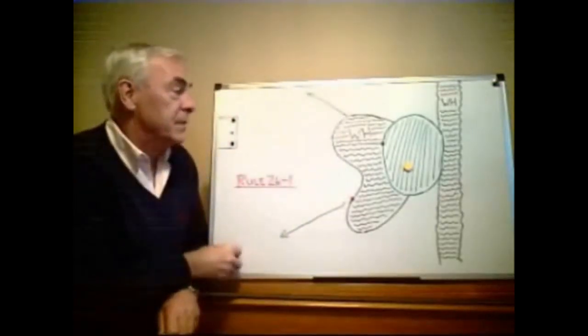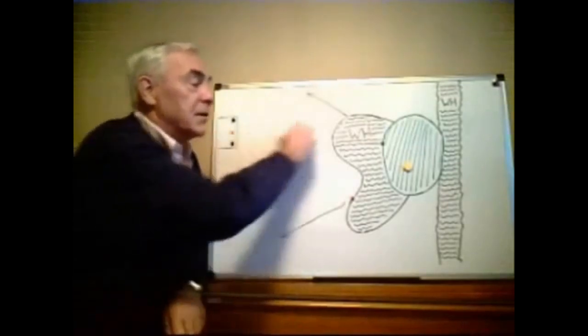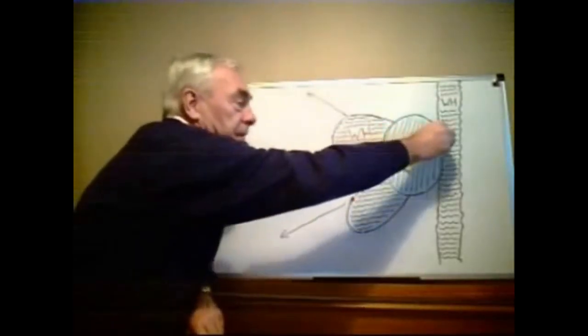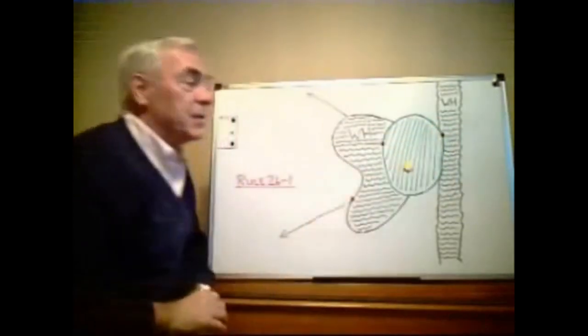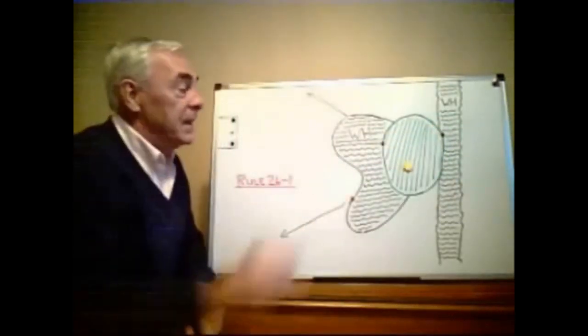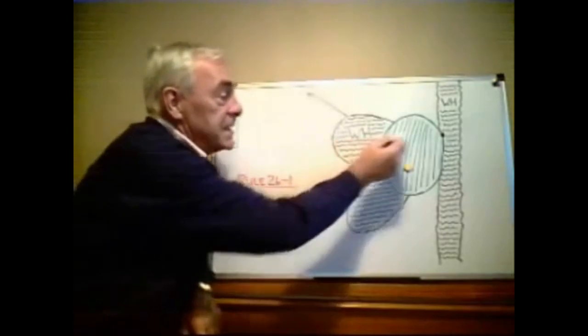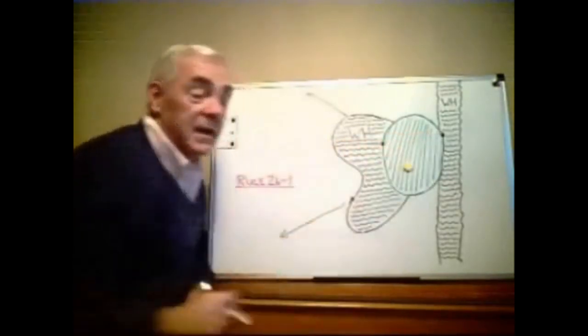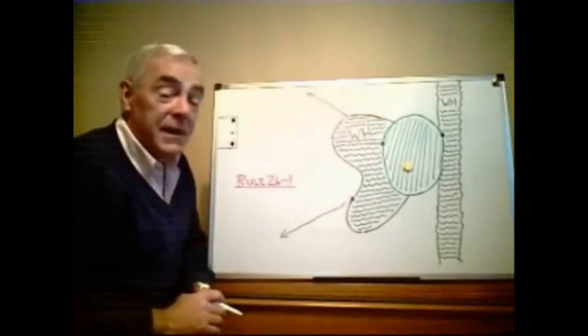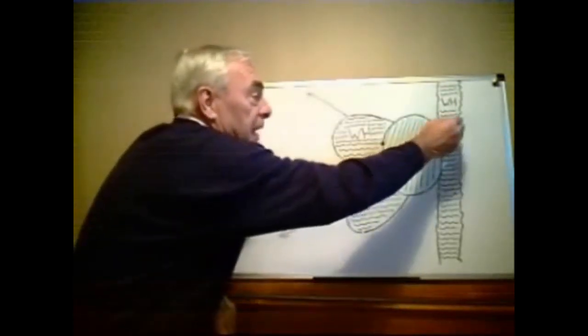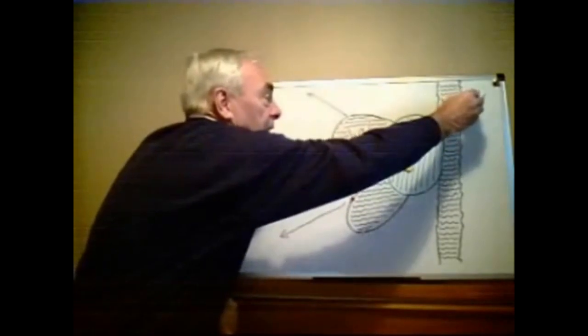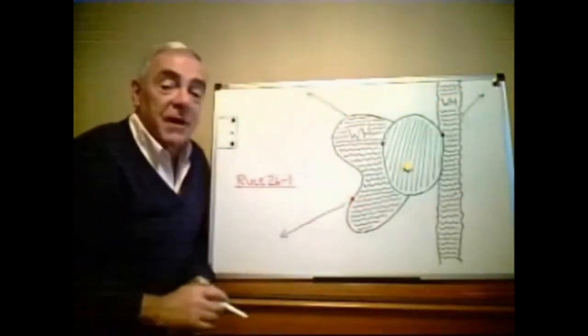The third scenario is where the player plays right across the green. It runs into the water on the far side last crossing the margin of the water hazard at that point. So it's crossed once twice and then third but this is the last time that it crossed the margin of a water hazard and therefore the line of relief is from the flagstick through that line and anywhere on a line going back as far as you like.